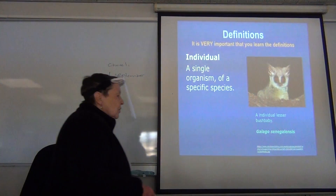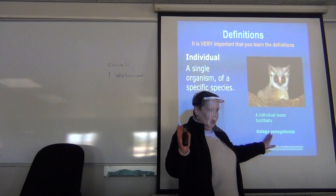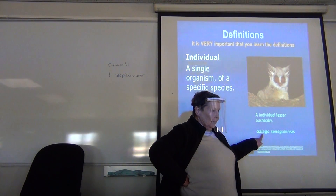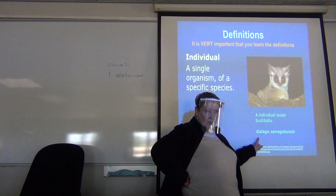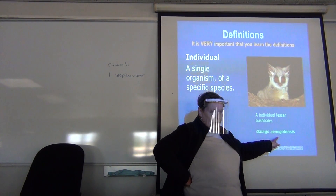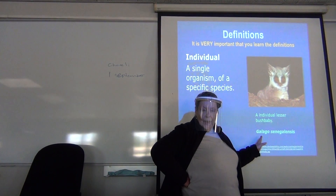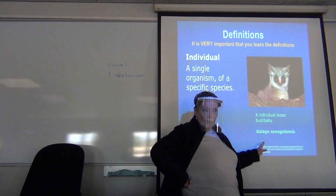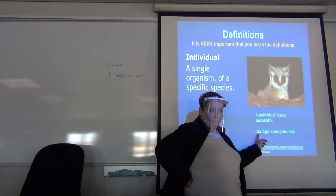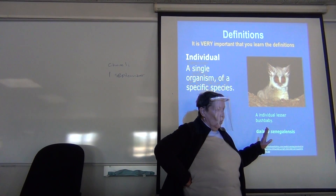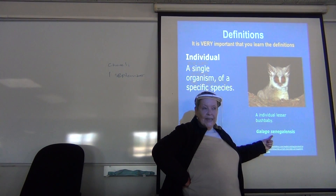Remember that the scientific name is two words. This is the genus name, this is the species name. The genus name is always written with a capital letter to start it, and the species name is all lowercase. If they ask for the species name only and you write the whole thing, you get nought. If you put the genus and the species name together, you get nought. If you write it with a capital letter, you get nought. If you don't underline it, you get nought.